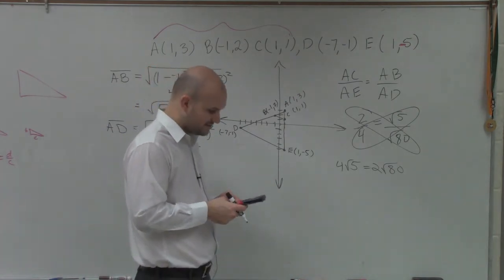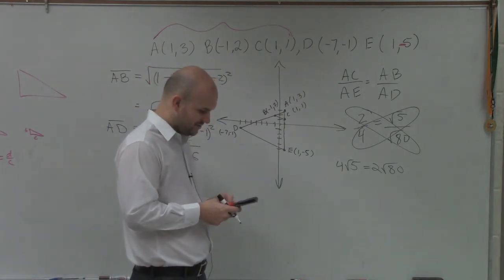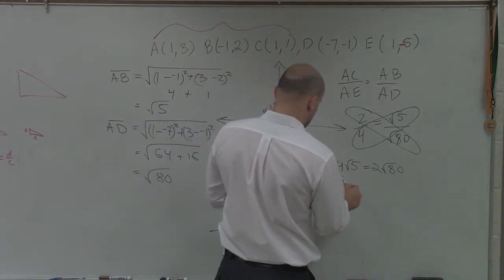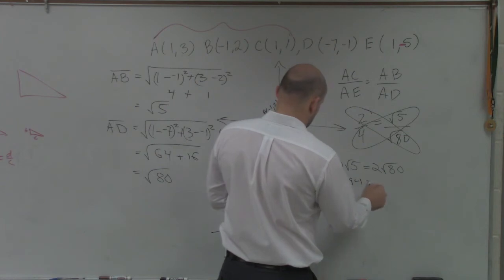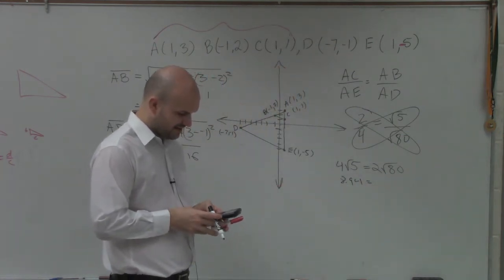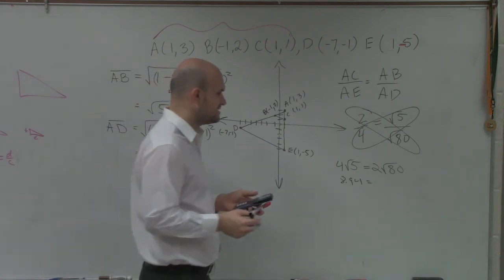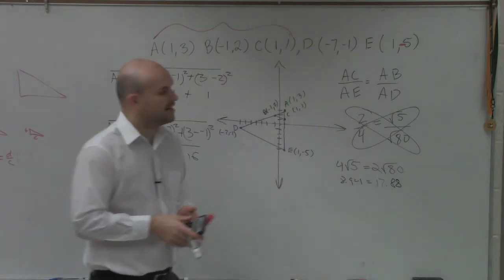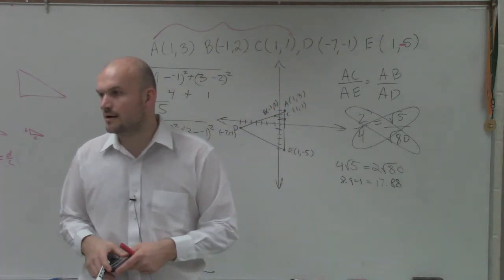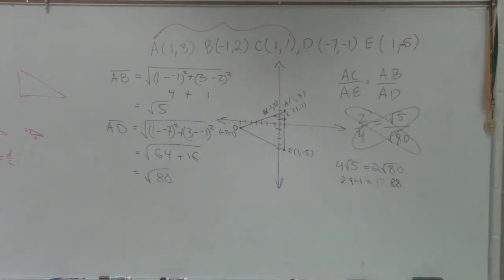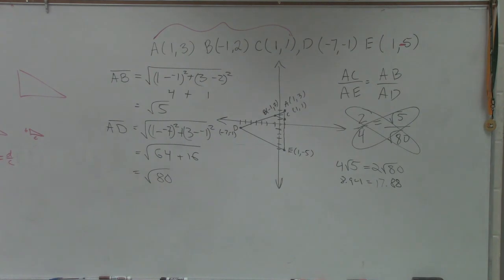So to estimate this, I'll just do 4 times the square root of 5. That gives me 8.94 equals 2 times the square root of 80. And that's 17.88. So therefore, ladies and gentlemen, are these proportional? No, they're not. And therefore, since they're not proportional, they do not have a scale factor.